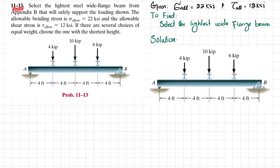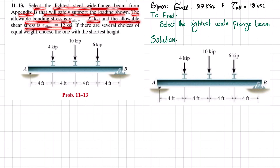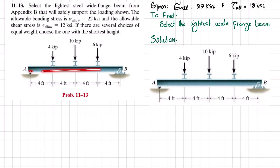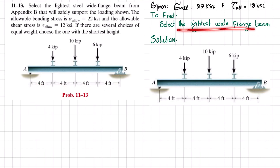Welcome back. Problem 11-13: select the lightest steel wide flange beam from Appendix B that will safely support the loading shown. The allowable bending stress is 22 ksi and allowable shearing stress is 12 ksi. If there are several choices of equal weight, choose the one with the shortest height. This is a simply supported beam A-B where different point loads are applied at different locations.